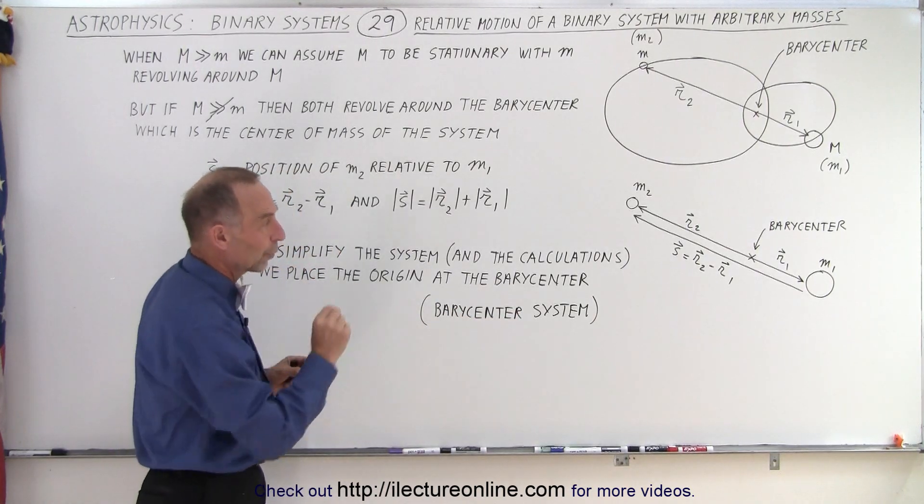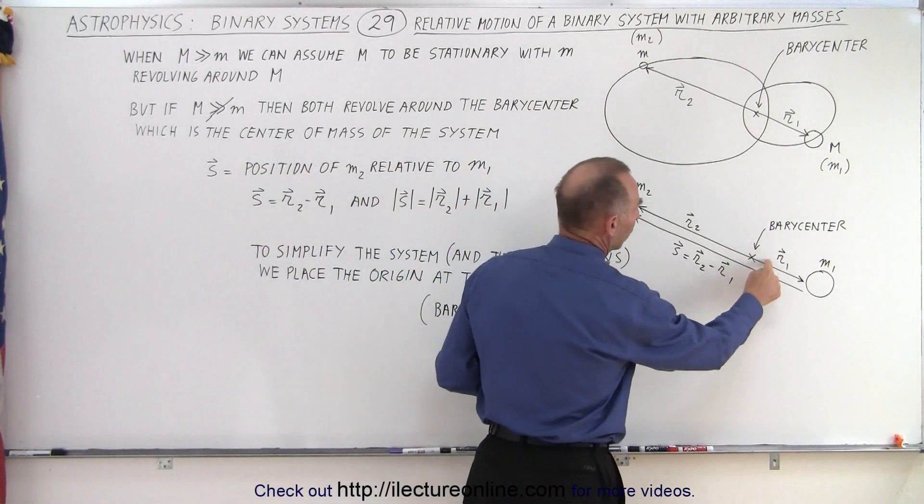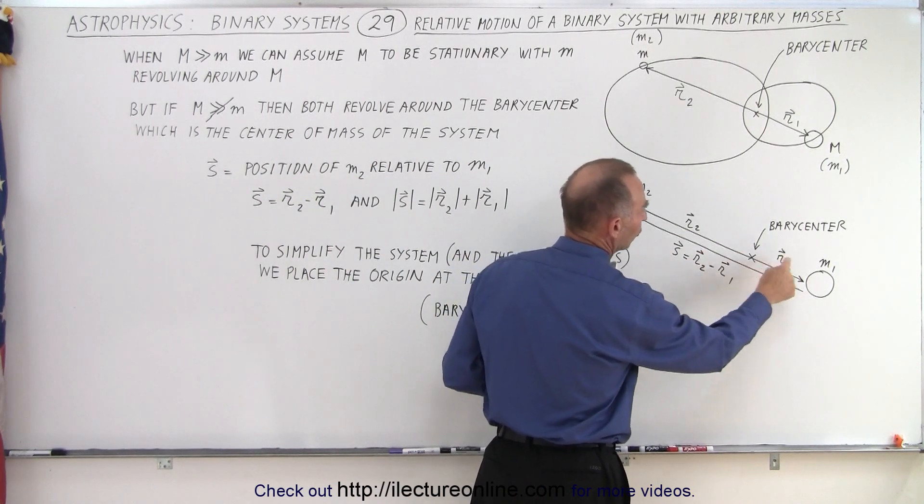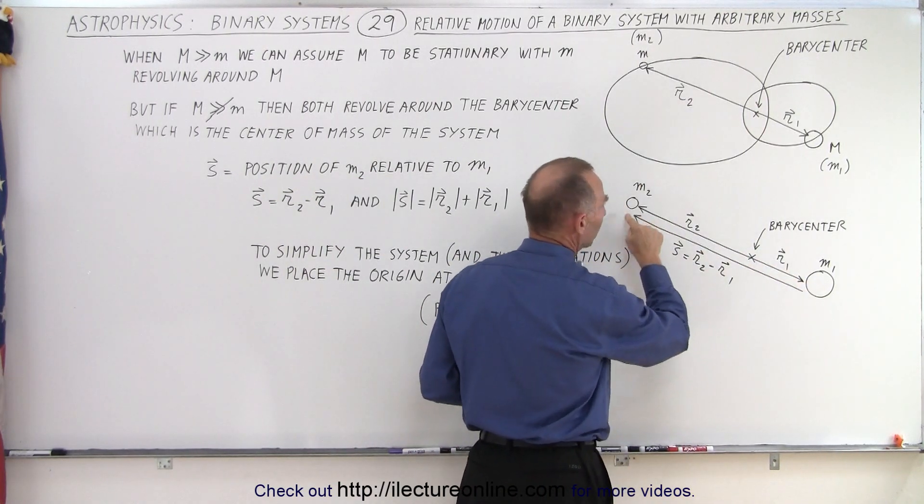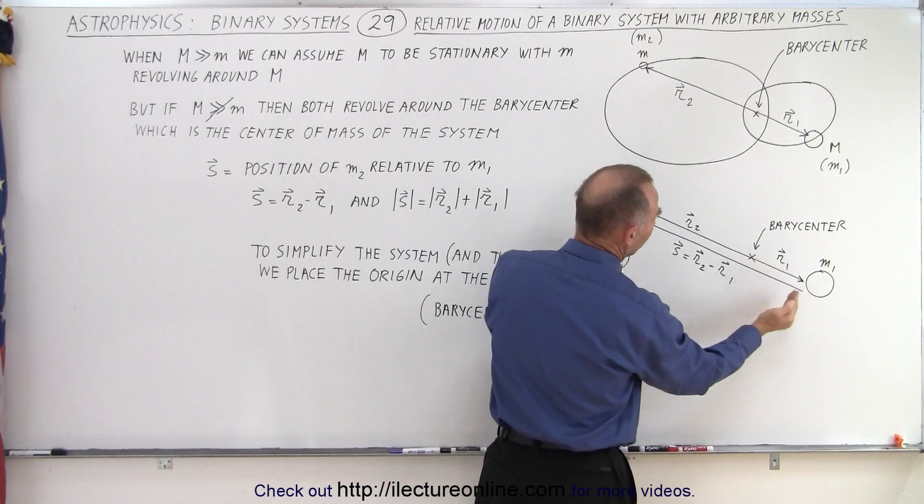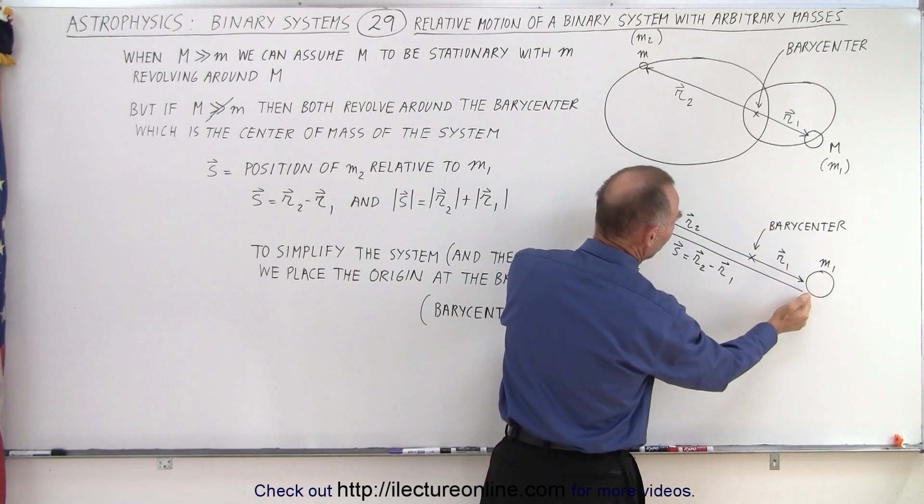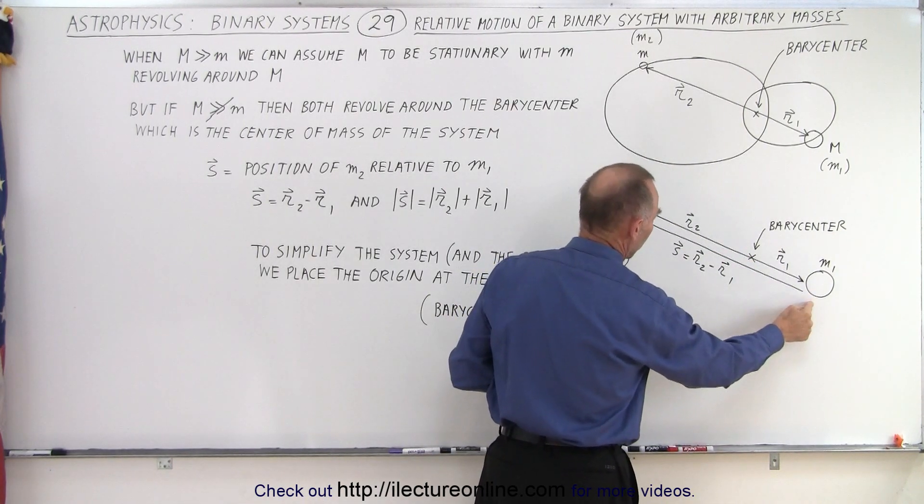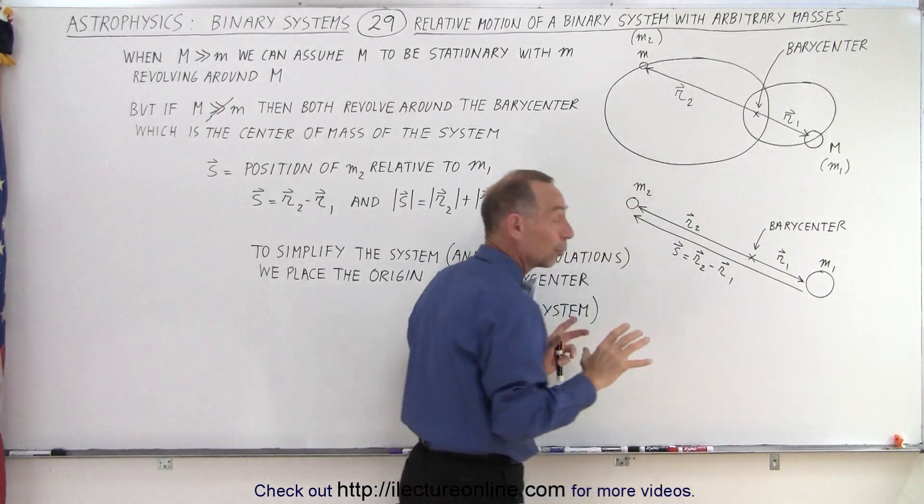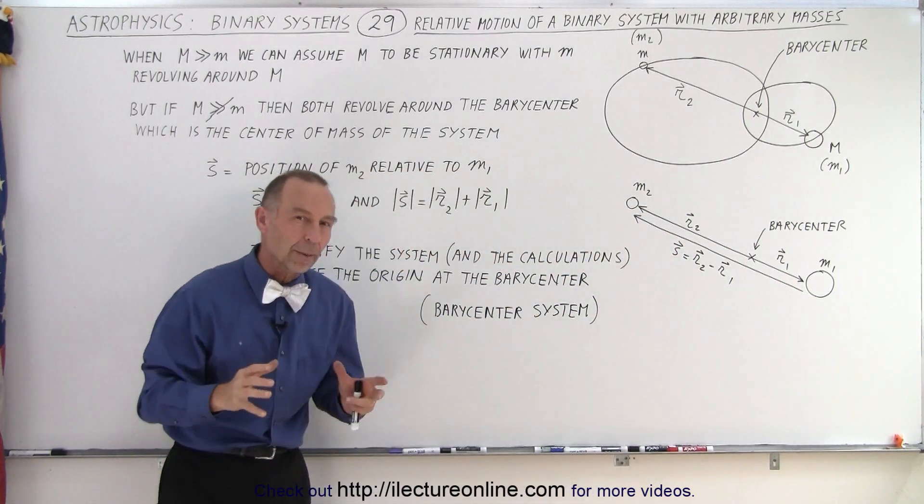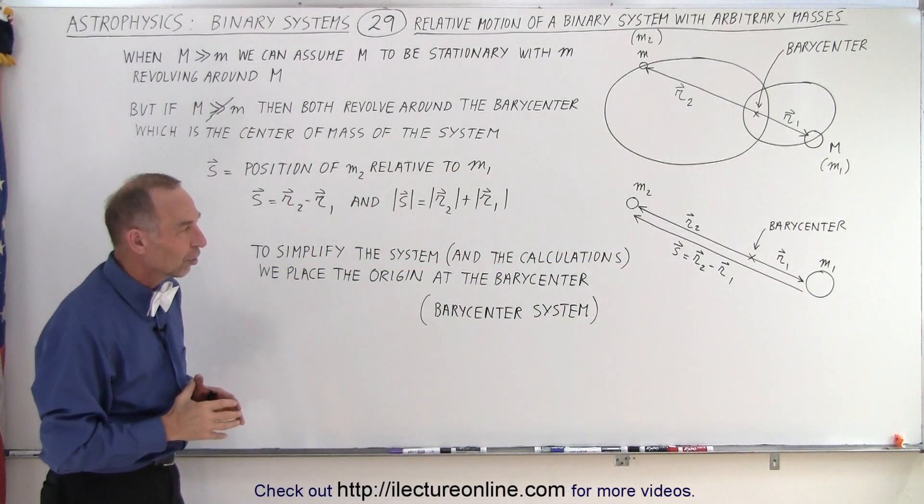So typically we put the origin right there, so that we see that the R1 and R2 are position vectors to the large object and the small object with respect to the barycenter. And then S is the position vector from the large object to the small object. And so we're going to be using that system to come up with a new set of equations that will help us understand the relative motion of the two objects.